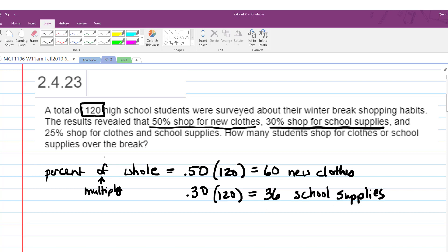And then 25% shopped for clothes and school supplies. So that's going to look like 0.25, the decimal form of the percent, of means times the whole, which is 120. A quarter of 120 is 30. 30 shopped for clothes and supplies.